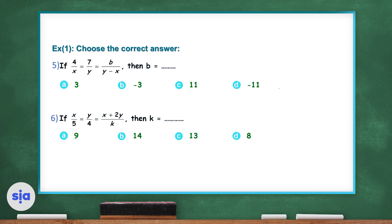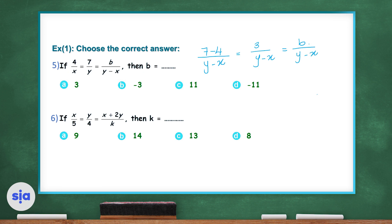Question 5. If 4 over x equals 7 over y equals B over y minus x, then what is the value of B? In the third ratio, we subtracted the first ratio from the second ratio. So it will be 7 minus 4 equals 3 over y minus x, which equals B over y minus x. Obviously, B equals 3. The right choice in question 5 is choice A.